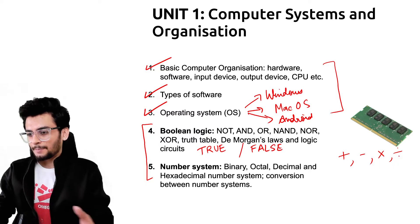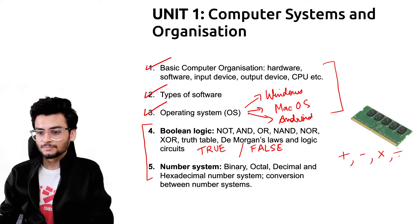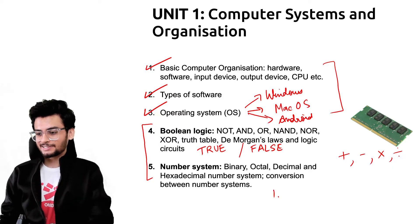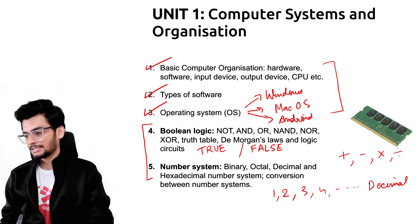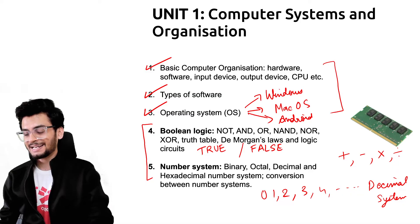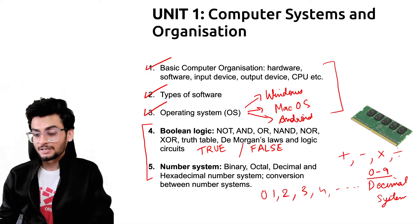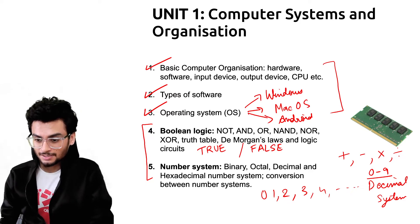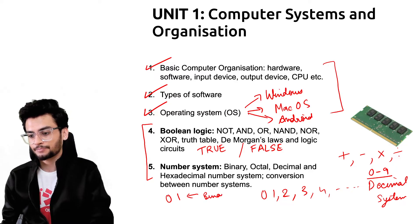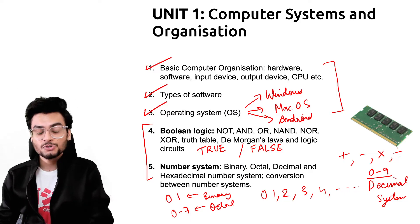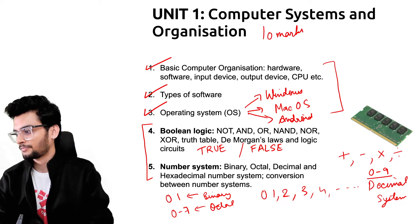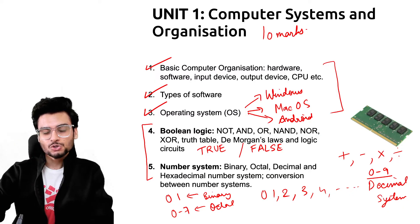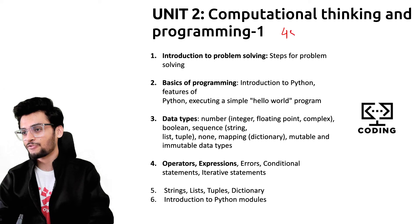The important part of Unit 1 is boolean logic and number systems. In mathematics we know addition, subtraction, multiplication, and division. Similarly, boolean logic is a new kind of mathematics revolving around true and false. For number systems: decimal has 10 digits (0–9); binary uses 0 and 1; octal uses 0–7. These are the mathematical concepts in computer science you will be learning, all coming for your 10 marks.